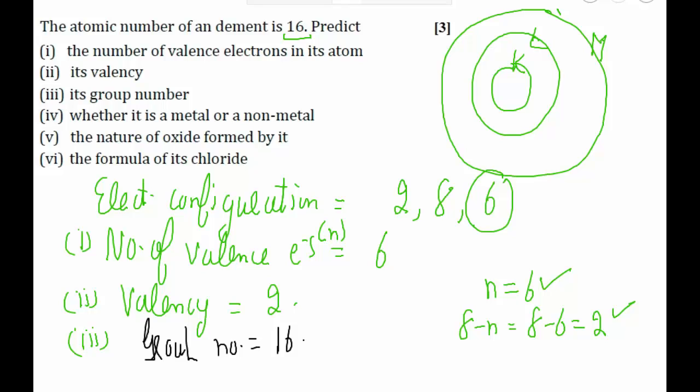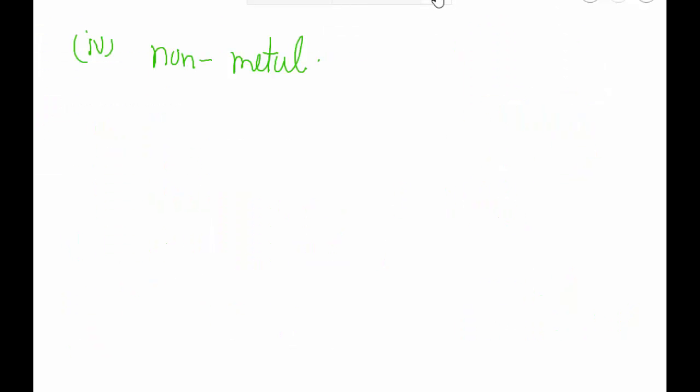The nature of oxide formed by it: always remember that metals form basic oxides and non-metals form acidic oxide. Because it is a non-metal, it will form an acidic oxide.